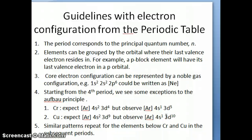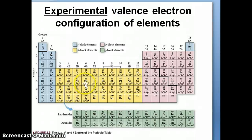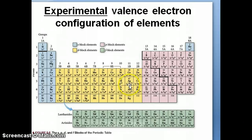This exception is not something you can predict without knowing quite a bit about quantum mechanics, so at this point you just have to memorize these two exceptions for chromium and copper. Similar patterns repeat for elements below them in the periodic table: molybdenum (below chromium) will have 5s1 4d5 instead of 5s2 4d4, and silver (below copper) will have 5s1 4d10 instead of 5s2 4d9.